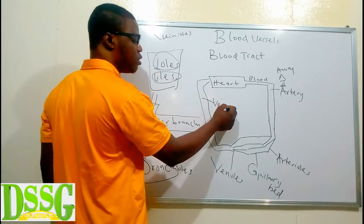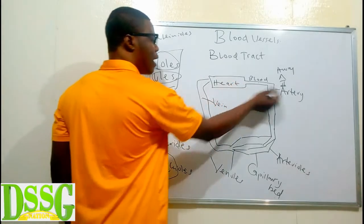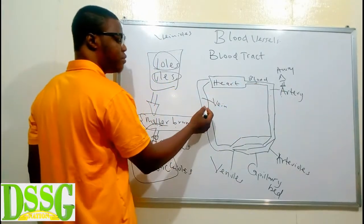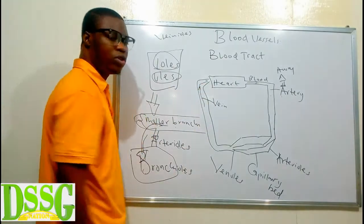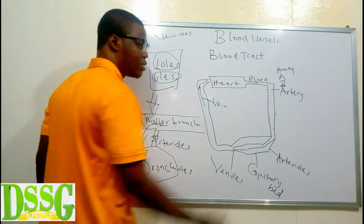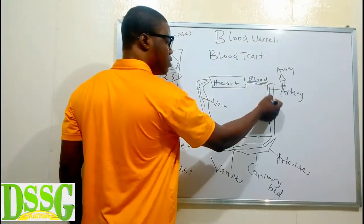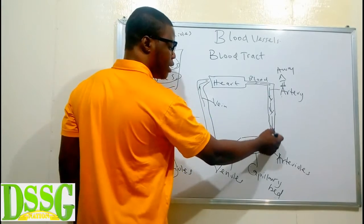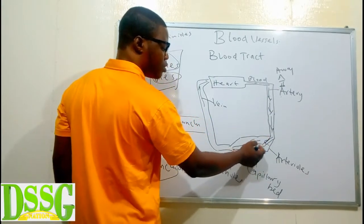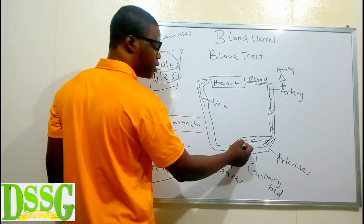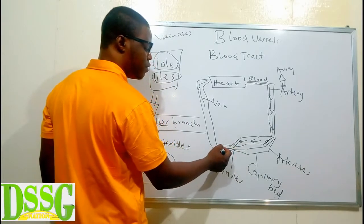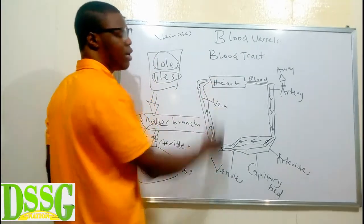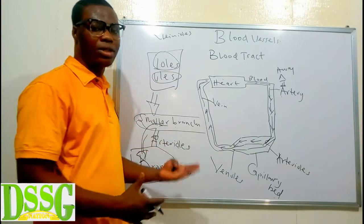So this is the vein. If the artery carries blood away from the heart, then the vein does the opposite — it carries blood towards the heart. So blood flows from the artery, which takes it away from the heart, then into arterioles, then into the capillary bed, then into the venules, and from the venules into the vein. The vein carries it back into the heart. That is the blood tract.